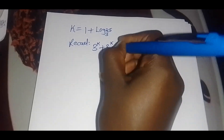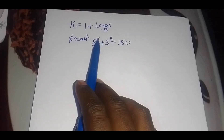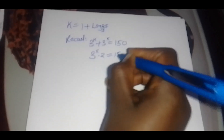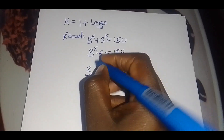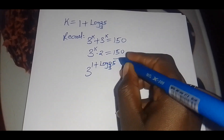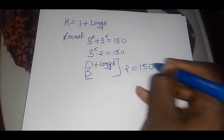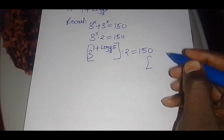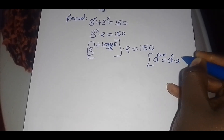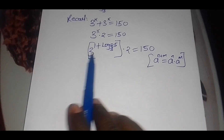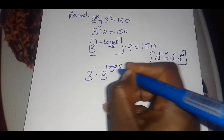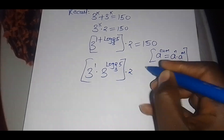Remember, we have 3 raised to power k plus 3 raised to power k equals 150. We substitute the value of k. We can express this as 3 raised to power k multiplied by 2 equals 150. So we substitute k equals 1 plus log base 3 of 25, giving us 3 raised to power (1 plus log base 3 of 25), multiplied by 2, which should equal 150. Applying the indices property that states a raised to power (n plus m) equals a raised to power n times a raised to power m, we get 3 raised to power 1 multiplied by 3 raised to power (log base 3 of 25), multiplied by 2, which should give 150.